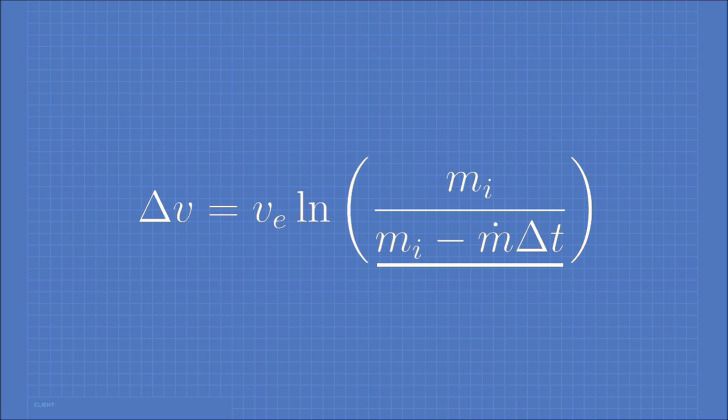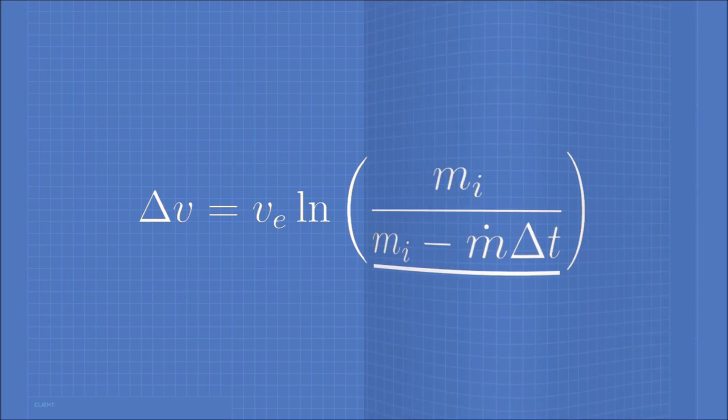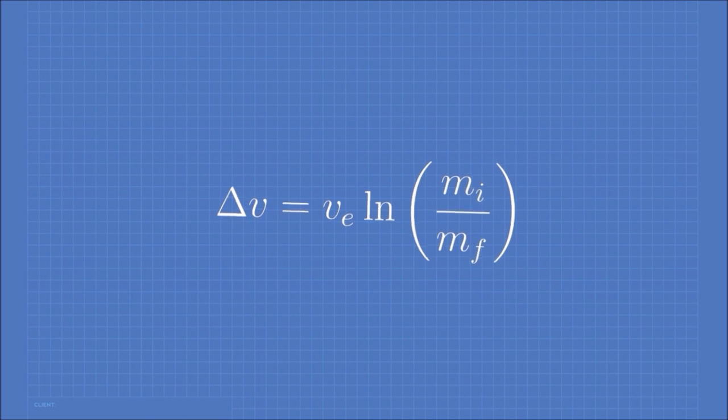This denominator here could be thought of as the mass of the rocket after the burn. Hence, we can change this to final mass. And there we go. There's our equation.